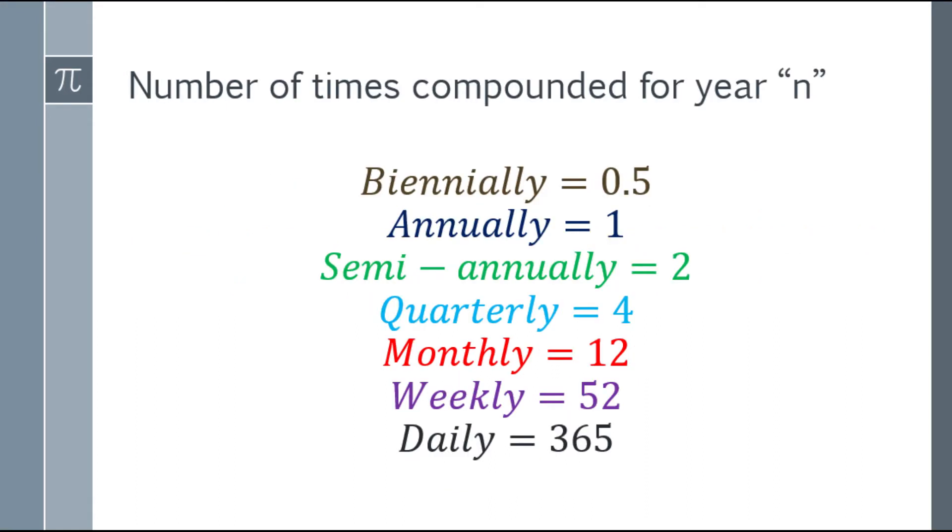So let's review also the number of times compounded for a year. This is variable N. So biannually is 0.5, annually is 1, semi-annually is 2, quarterly is 4, monthly is 12, weekly is 52, and daily is 365.